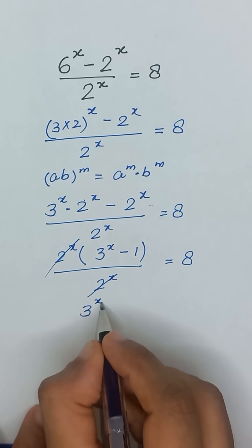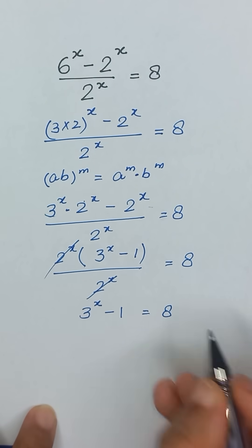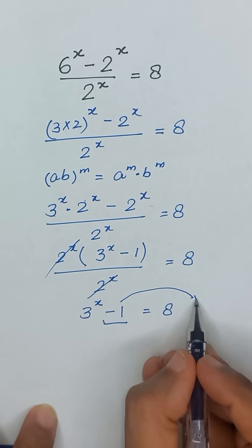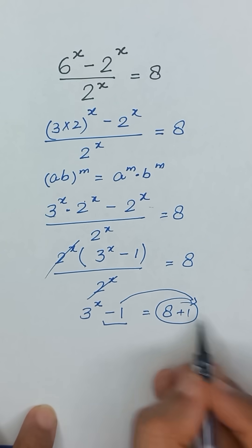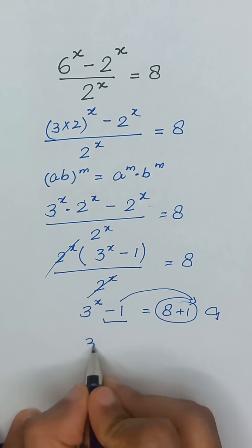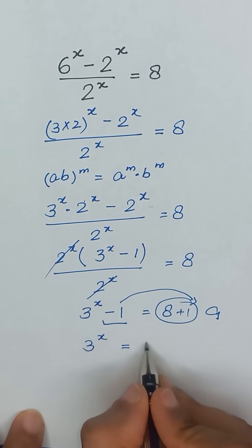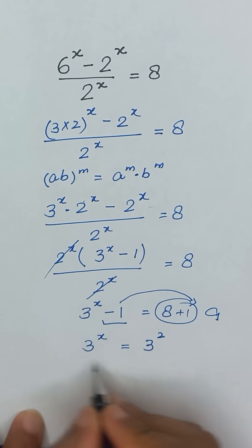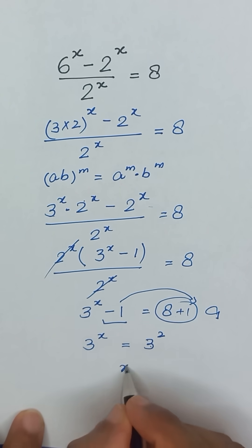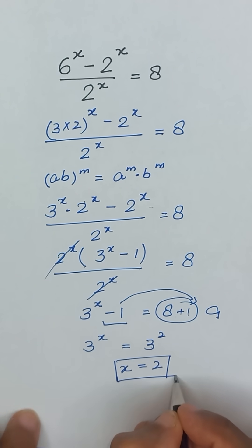This gives us 3 to the power x minus 1 is equal to 8. Taking negative 1 to the right-hand side, it becomes plus 1, so 3 to the power x is equal to 9, which can be written as 3 to the power 2. Equating the powers, the value of x is equal to 2. Thanks for watching.